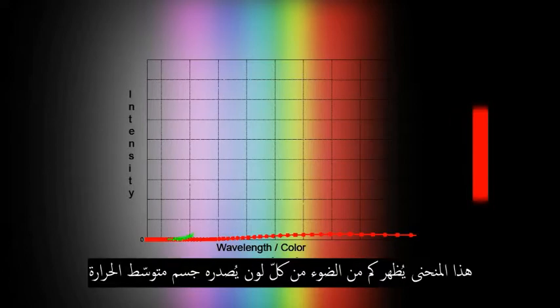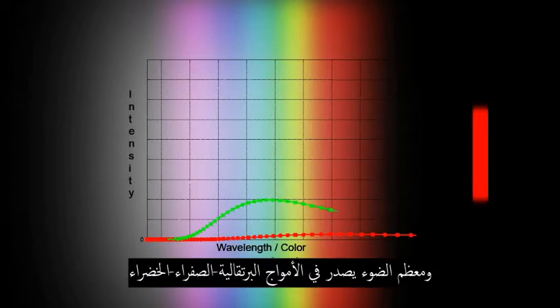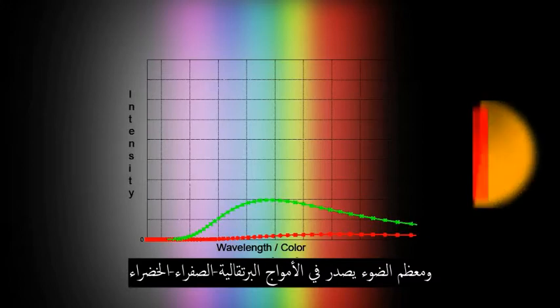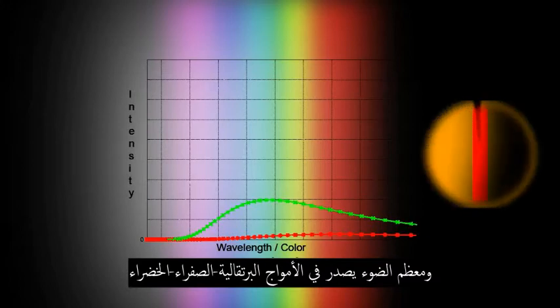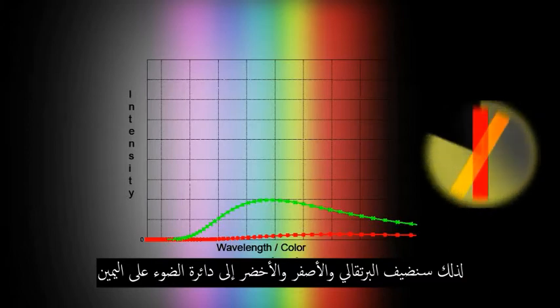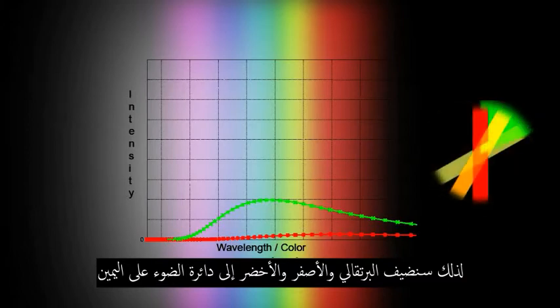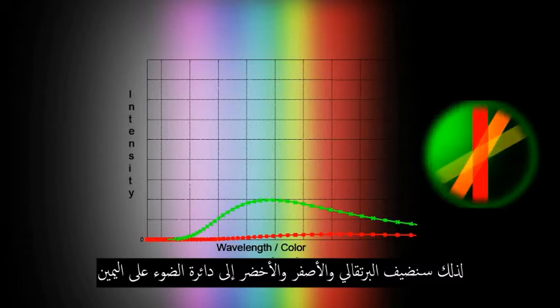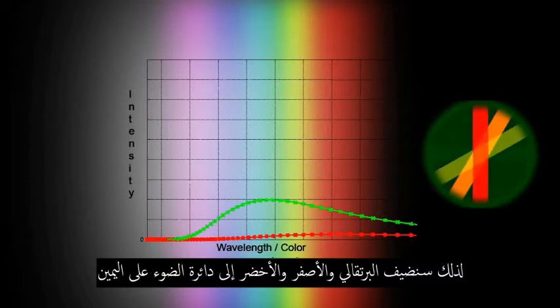This curve shows how much light of each color is emitted by a medium temperature object, and the most light is emitted in the orange, yellow, green wavelengths. So now we add orange, yellow, and green to our cauldron of light on the right. As you can see, the combination so far looks yellow.